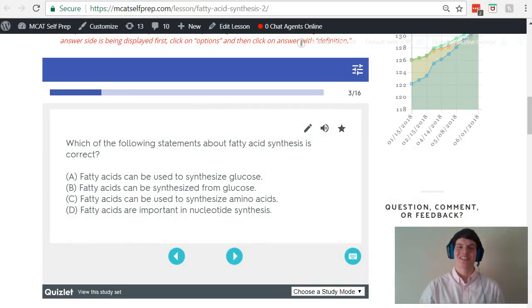Let's take a second look at the question stem. Which of the following statements about fatty acid synthesis is correct? Answer choice A, fatty acids can be used to synthesize glucose. That is not true. As we discussed, the pyruvate dehydrogenase mechanism is not reversible, therefore fatty acids cannot go back into glucose.